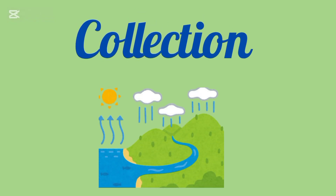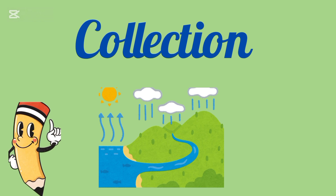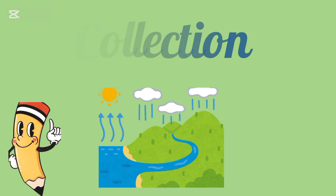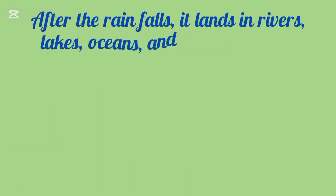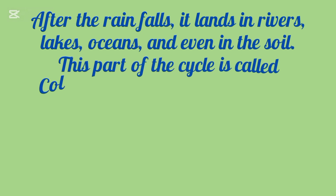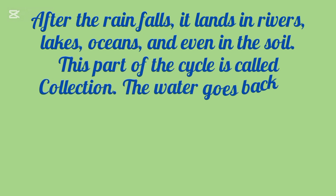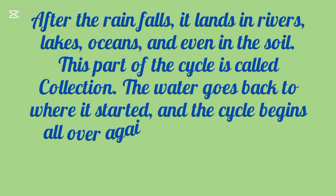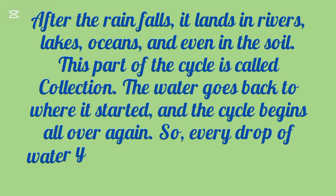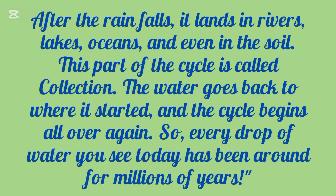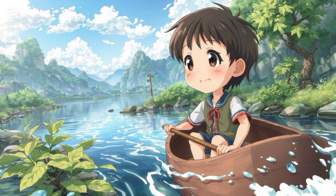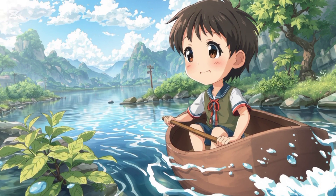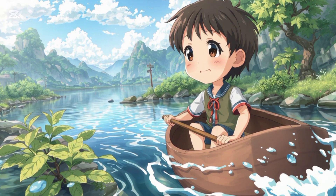The fourth step is collection. After the rain falls, it lands in rivers, lakes, oceans, and even in the soil. This part of the cycle is called collection. The water goes back to where it started and the cycle begins all over again. So every drop of water you see has been around for millions of years!